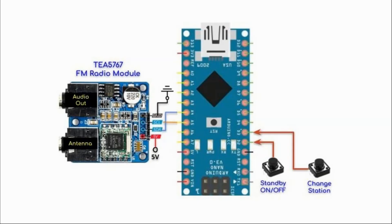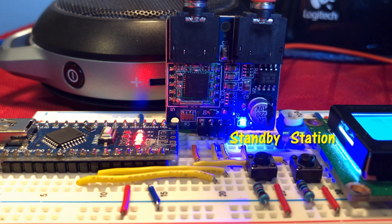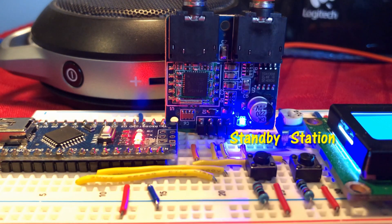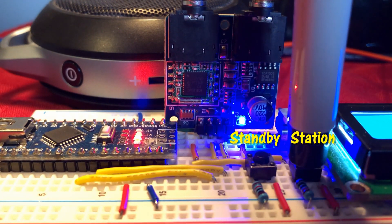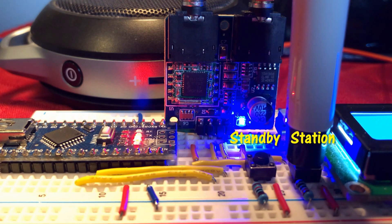A circuit diagram of the implemented system is shown here. We have the FM receiver module connected to the Arduino using I2C connection. We have two push buttons connected to two digital pins. This button is used to turn on or off the standby mode, while this button is used to change the FM station. We press the station button to exit standby mode and play the first station, press again for the second, press again for the third, and press again to go back to the first station.